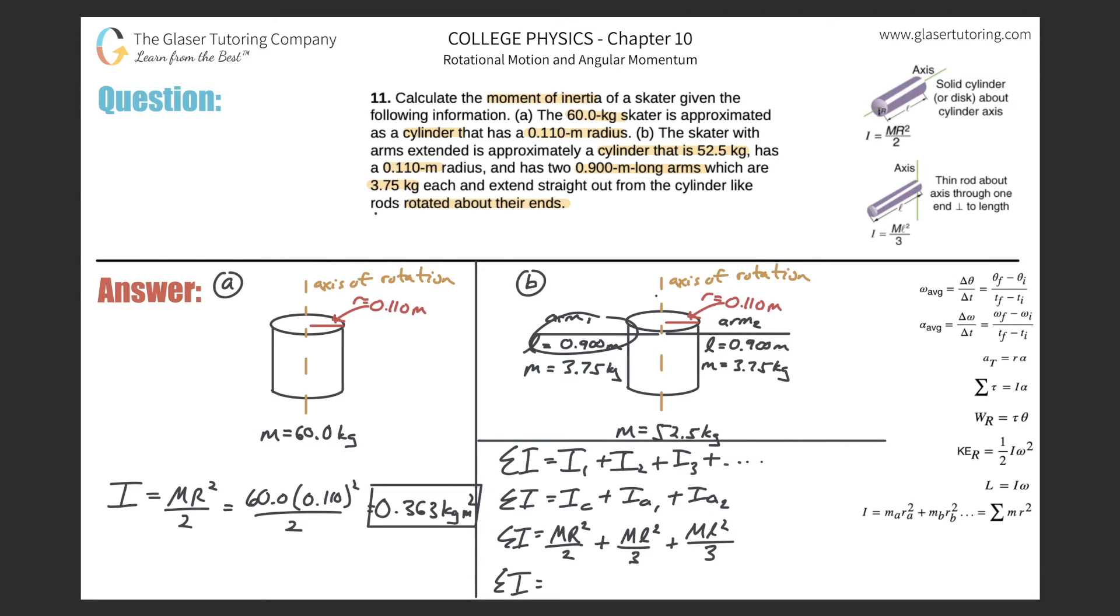Remember, consider each piece separately. The cylinder—they told us that now the mass of this cylinder that's rotating is going to be 52.5. Why is it less than 60? Well, because now her arms are extended, so we have to treat them as separate pieces in relation to the cylinder.